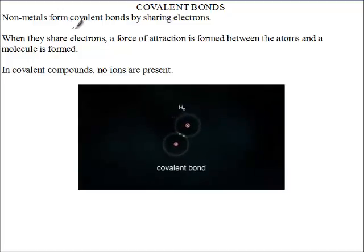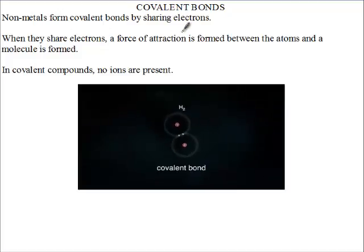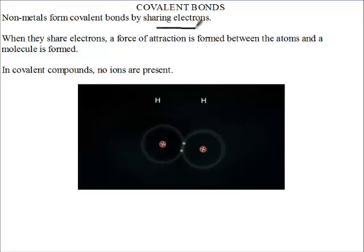Now for covalent bonds, they are formed between two nonmetals. So nonmetals form covalent bonds. What do they do? They share electrons.